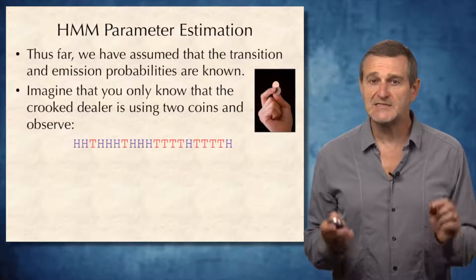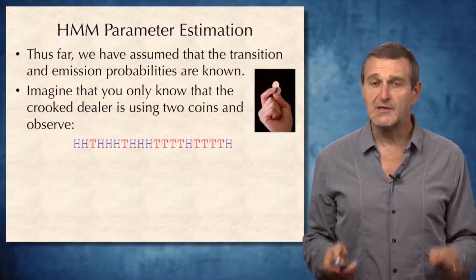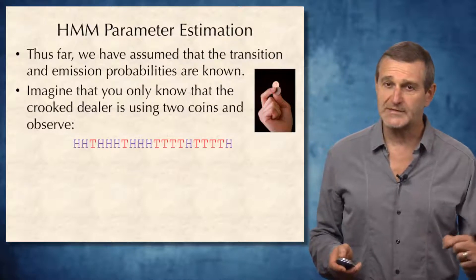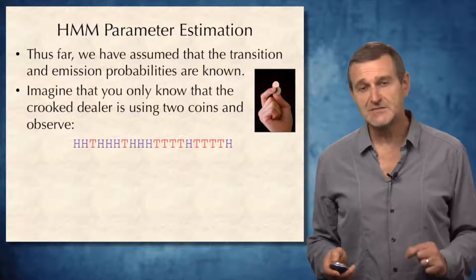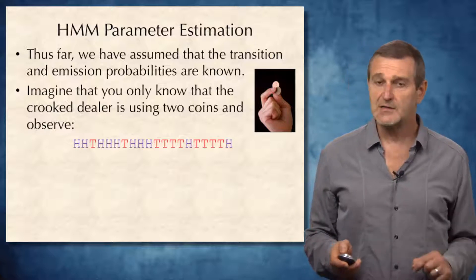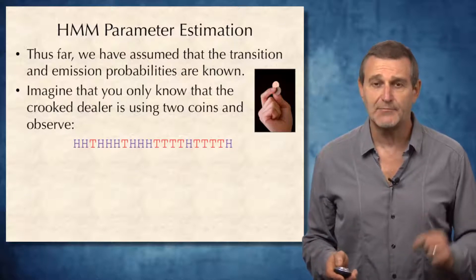So far, we have assumed that the transition and emission probabilities of the HMM are known. For example, when you walked in the crooked casino, you knew that the dealer changes the coins with probabilities 0.1, and you also knew the biases of both fair and biased coins.